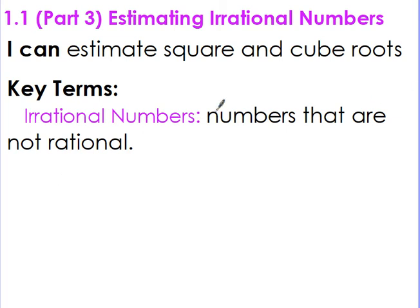Irrational numbers are numbers that are not rational. Basically, once they become a decimal, they go on forever and they do not repeat and they do not terminate. Pi is an example of an irrational number — it goes on forever, does not repeat, and does not come to an end.